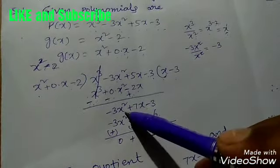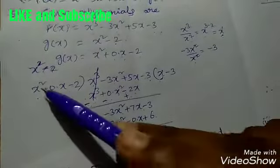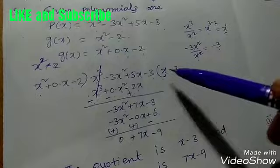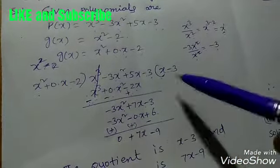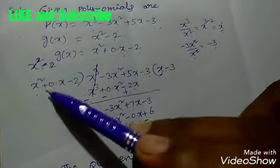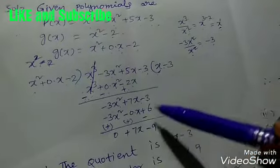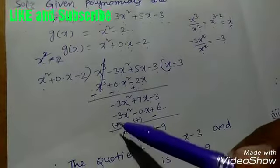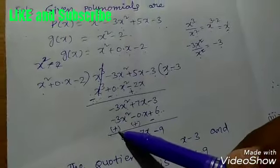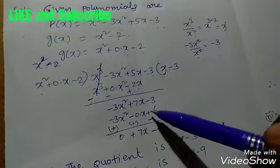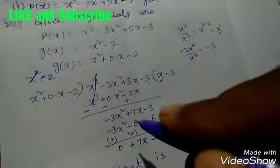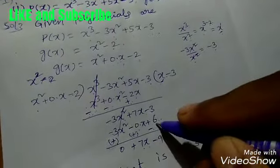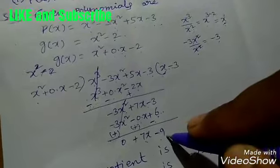The next term in the quotient is -3x² ÷ x² = -3. We write -3 in the quotient and multiply -3 by (x² + 0·x - 2) to get -3x² + 0x + 6. Subtracting (signs change): -3x² + 3x² cancels. We get 7x + 0 = 7x, and -3 - 6 = -9. So the remainder is 7x - 9.